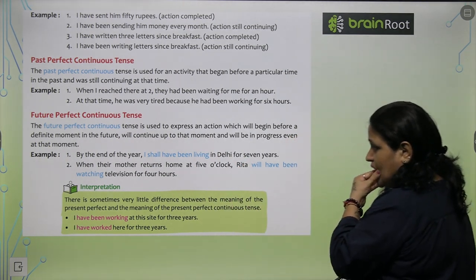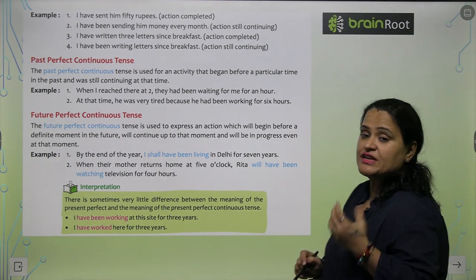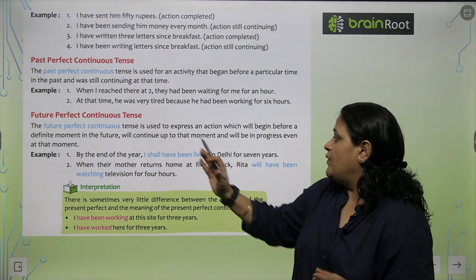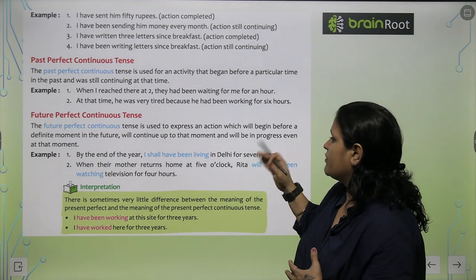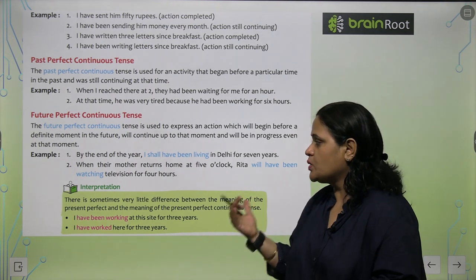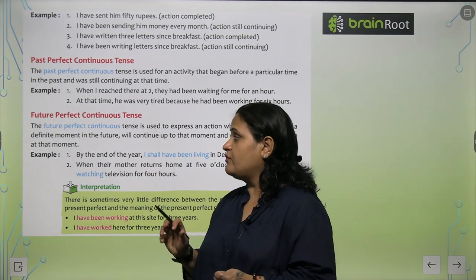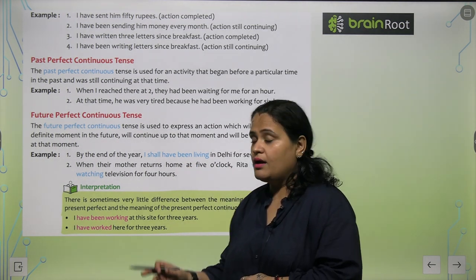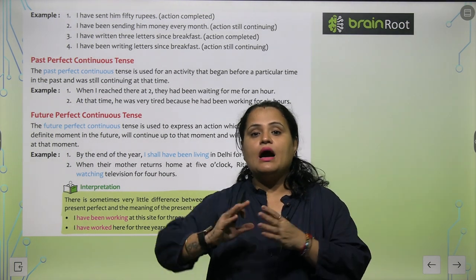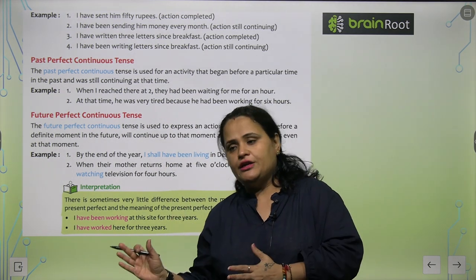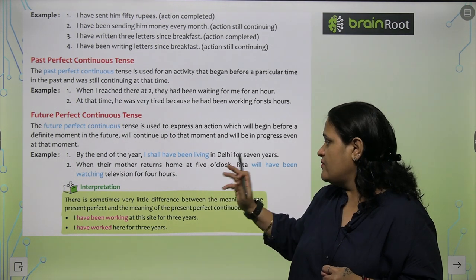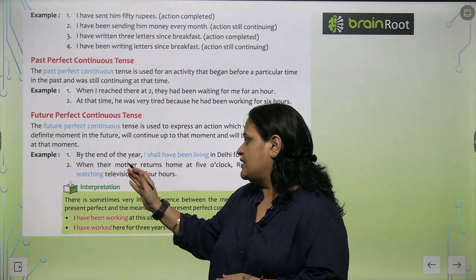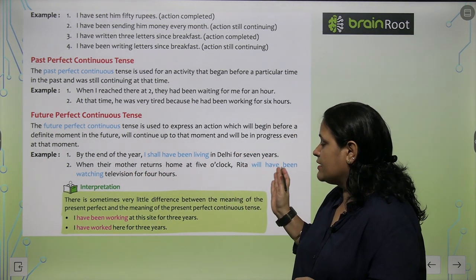The future perfect continuous tense is used to express an action which will begin before a definite moment in the future, will continue up to that moment, and will be in progress even at that moment. For example: By the end of the year, I shall have been living in Delhi for 7 years. When their mother returns home at 5 o'clock, Rita will have been watching television for 4 hours.